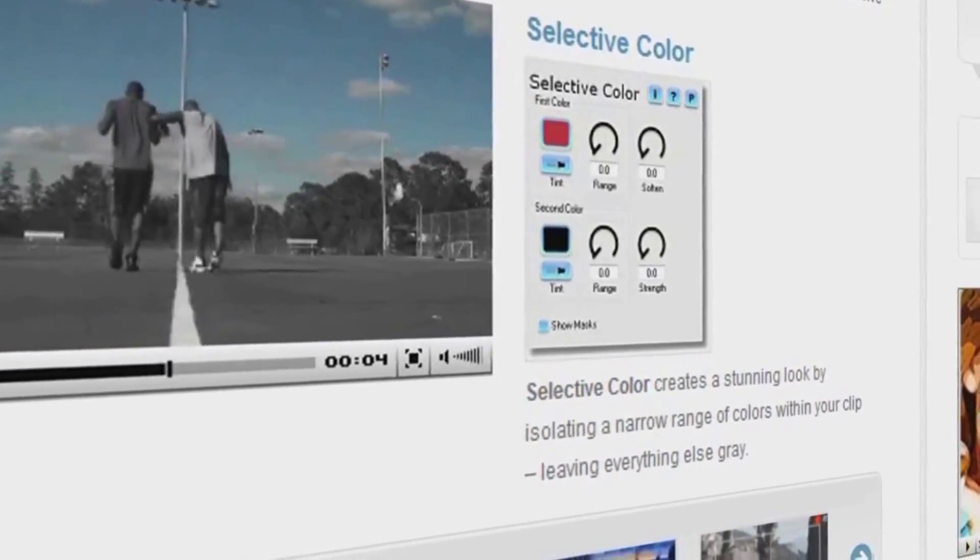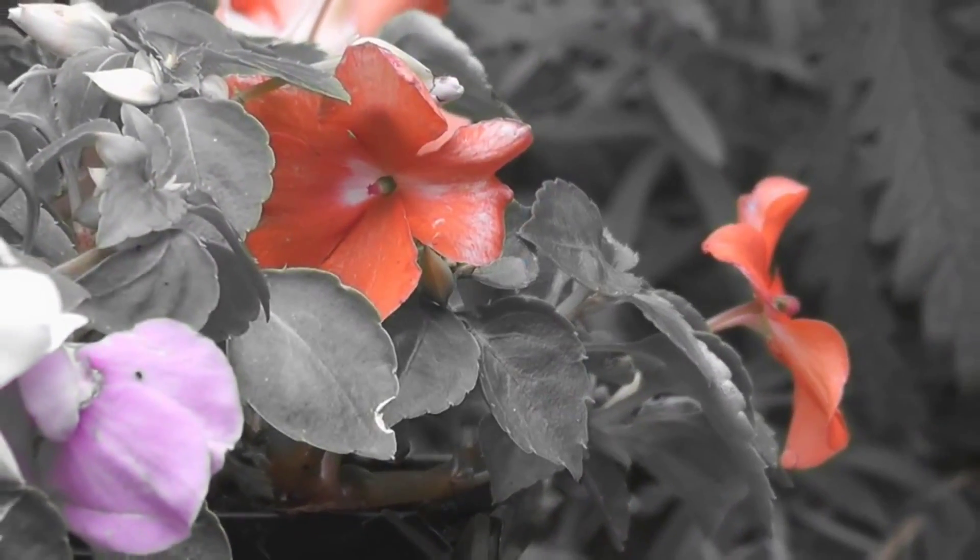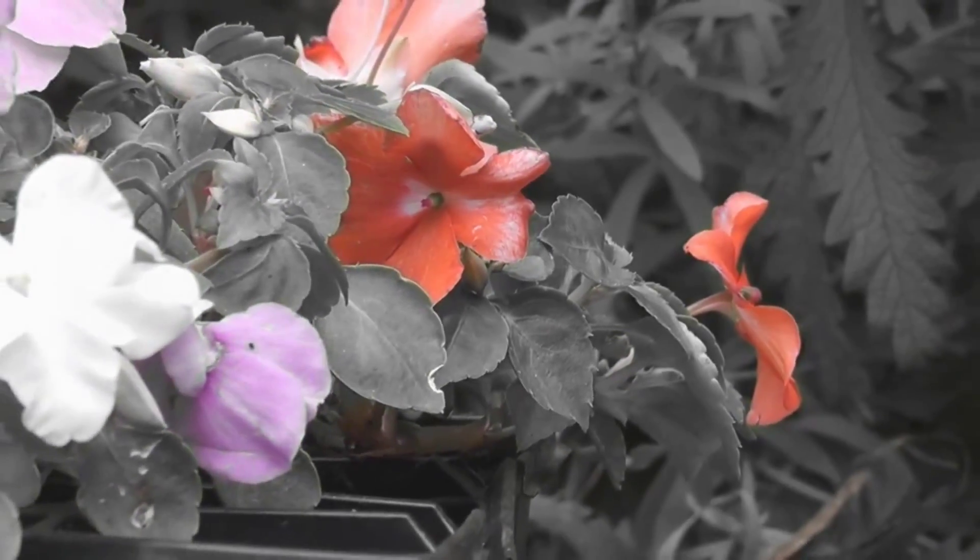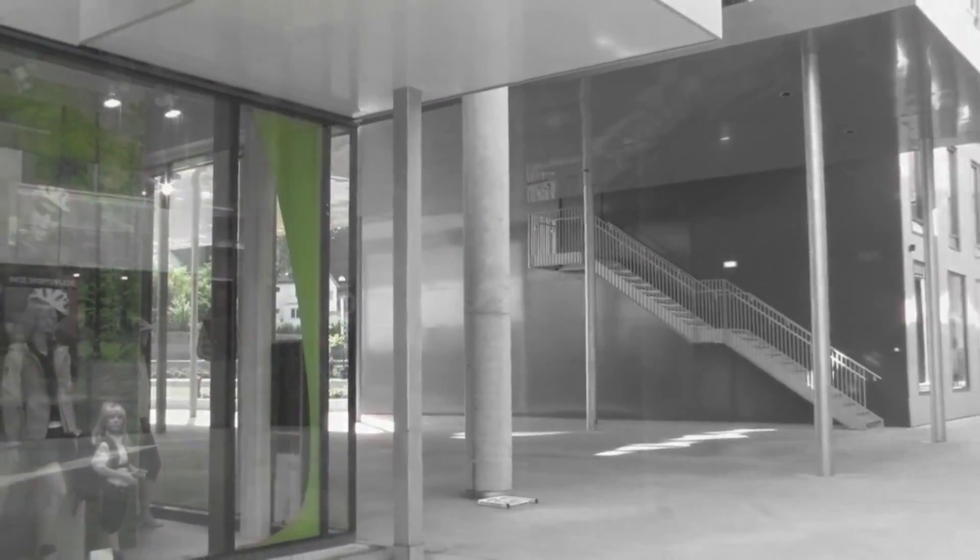What this plugin does is pretty much given away in its name, but just in case you haven't worked it out yet, Selective Color lets you choose up to two colors from your image and then display only those colors in the final picture, whilst everything else remains in shades of grey.